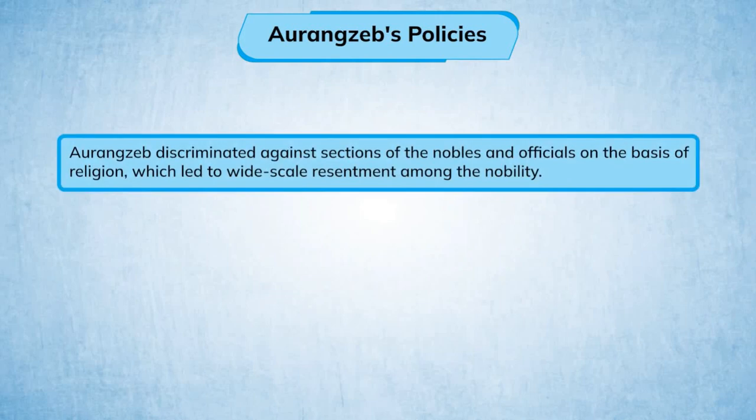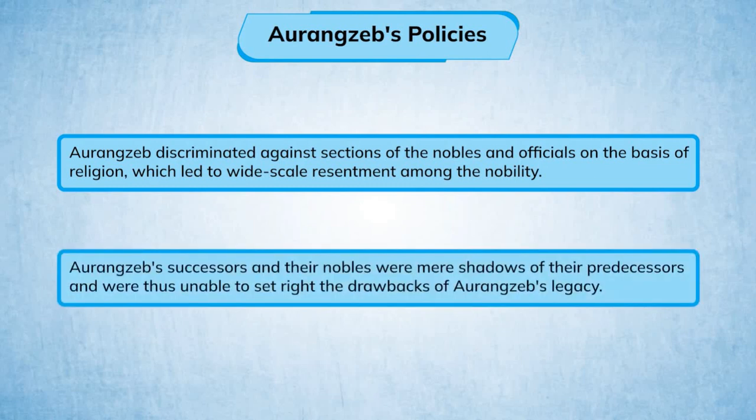Aurangzeb discriminated against sections of the nobles and officials on the basis of religion, which led to widespread resentment among the nobility. Aurangzeb's successors and their nobles were mere shadows of their predecessors and were unable to set right the drawbacks of Aurangzeb's legacy.